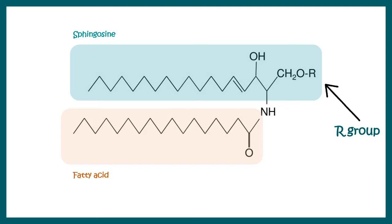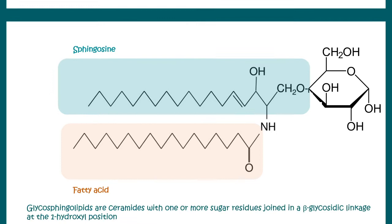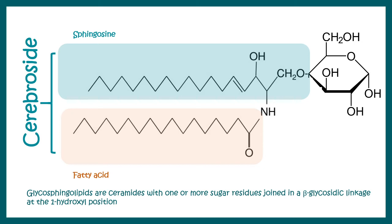If this R group is hydrogen only, then this is known as ceramide. Now if this R group is glucose, then this particular sphingolipid would be known as cerebrocyte, and as the name suggests, it would be found in the nervous system, especially in the myelin sheath.